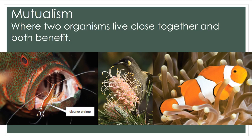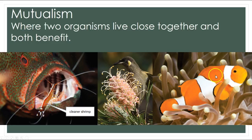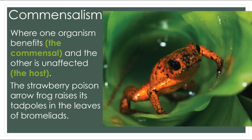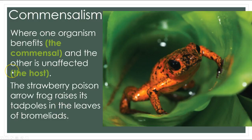Another type of interaction is mutualism, where two organisms live close together and both benefit. A great example is the clownfish and the anemone — the clownfish lives in the anemone for protection because the anemone's barbs sting, and the anemone gets to eat bacteria off the clownfish. Commensalism is where one organism, the commensal, benefits and the other is unaffected. For example, the strawberry poison arrow frog raises its tadpoles in the leaves of bromeliads; the bromeliads are not impacted, but the frog has somewhere safe to raise its eggs.